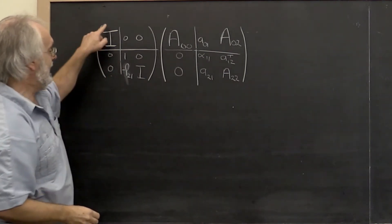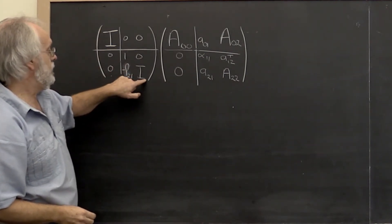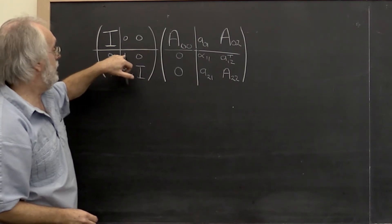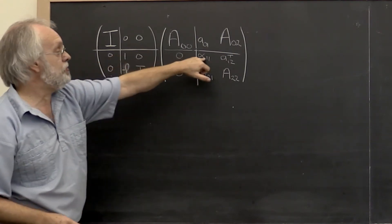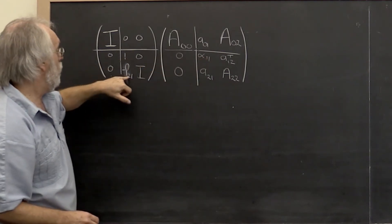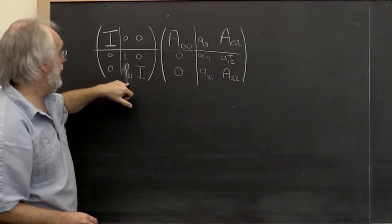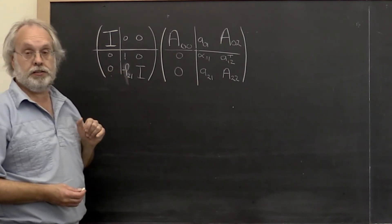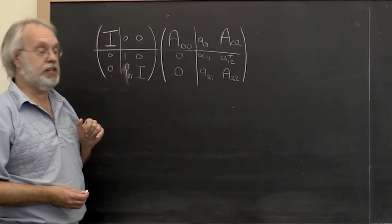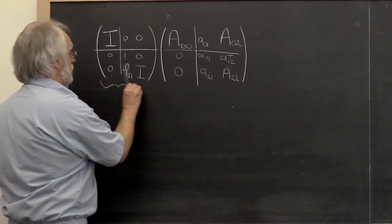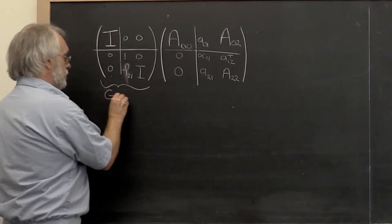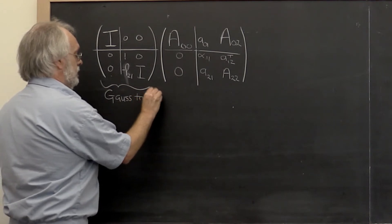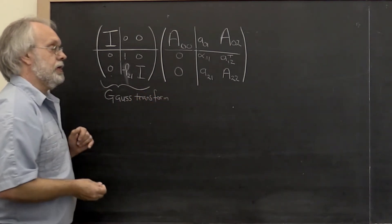So it's the identity matrix except below the one that is in the same position as this alpha 1 1. We have a vector L21 except that we take the negative of that vector. This right here is called a Gauss transform.